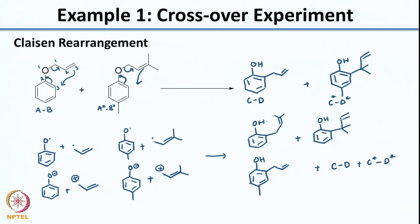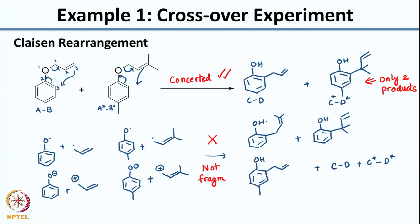But only 2 products are actually observed when you do this reaction. That indicates that the reaction goes via the concerted pathway and not by any of the fragmentation pathways. This is a very nice illustration of how you can use the crossover experiment to figure out the nature of the mechanism.